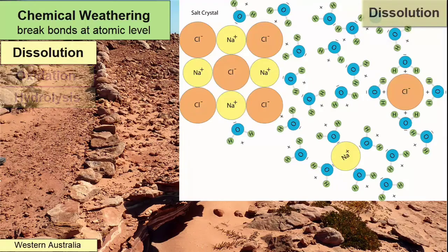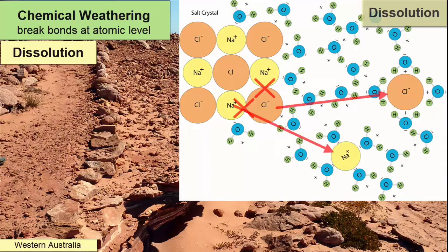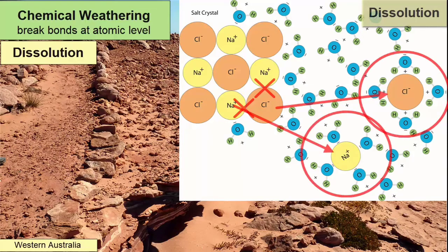Dissolution happens when the atomic bonds in a mineral or shell are broken by water molecules. Polar water molecules will pull apart ions from solid crystals and surround those ions in hydration spheres. These hydration spheres keep the ions separated so they can't recombine. The ions stay dissolved in the water as long as there is enough water to keep them separated.